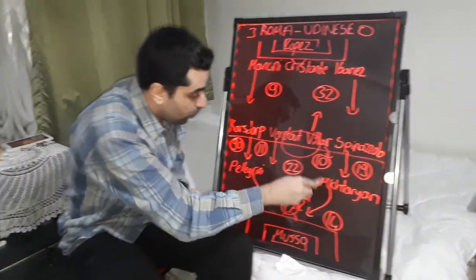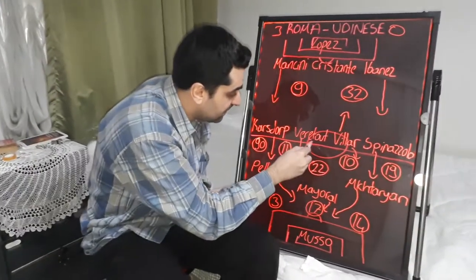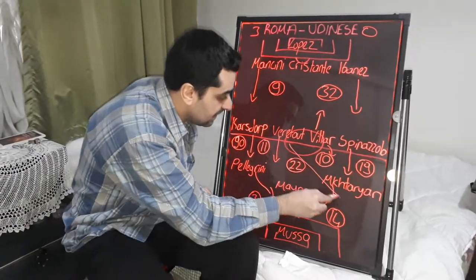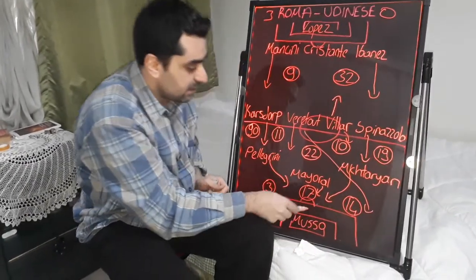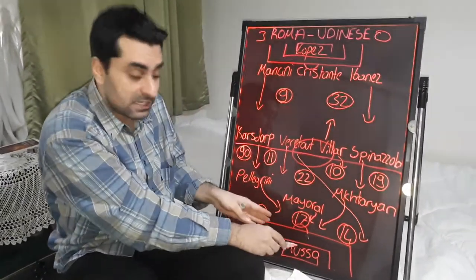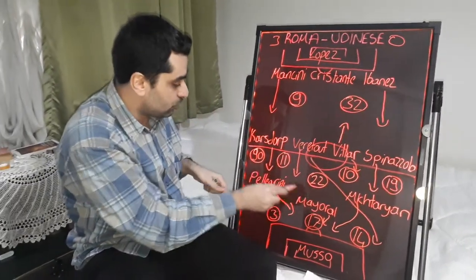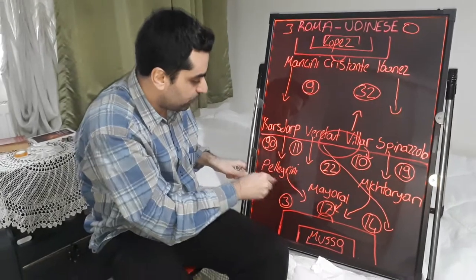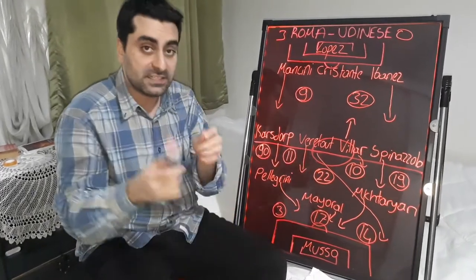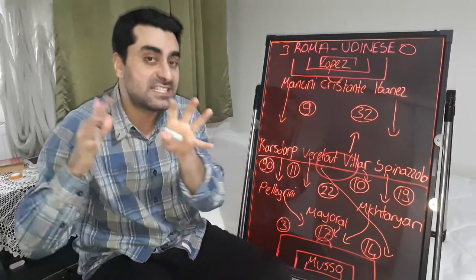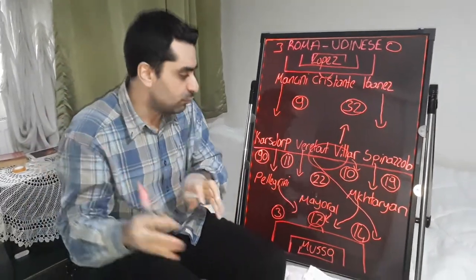Werotut came from the left and played a pass into the box; Pellegrini came from the right and scored the goal — but this goal was disallowed by the referee.